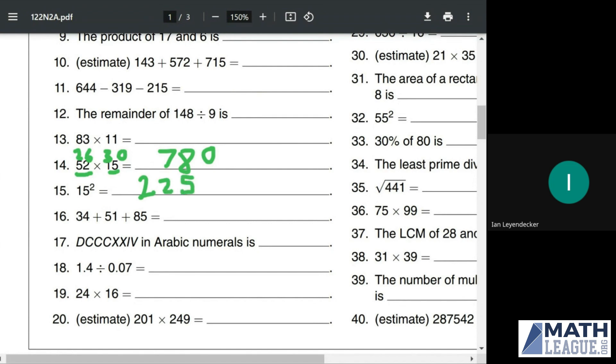34 plus 51 plus 85. First of all, if we add together 34 and 51, we get 85, and then 85 plus 85 is just 85 times 2, which is 170.